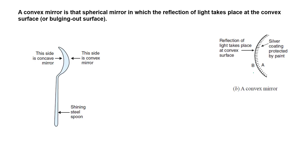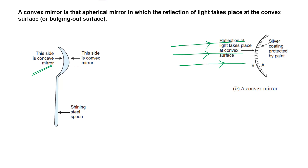A convex mirror is the opposite of a concave mirror — its reflecting surface bulges outward. For a convex mirror, the outward bulging part is used as the reflecting surface, while the inward part has the silver coating protected by paint. A shiny steel spoon is a good example: the cave part acts as a concave mirror, and the outward bulging smooth part acts as a convex mirror.